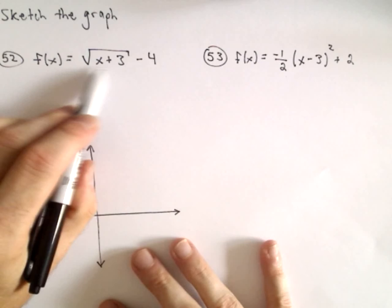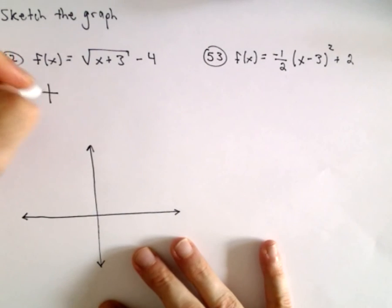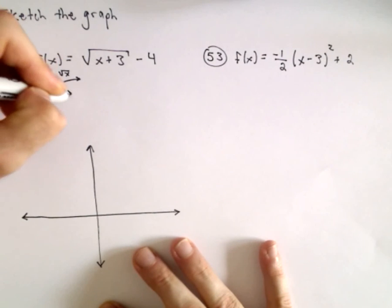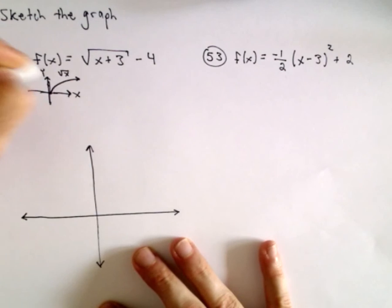So I see f(x) = √(x+3) - 4. Recall that the square root of x, I'm going to make a little small graph here, the square root of x basically looks like that. So there's the x-axis, there's the y-axis.